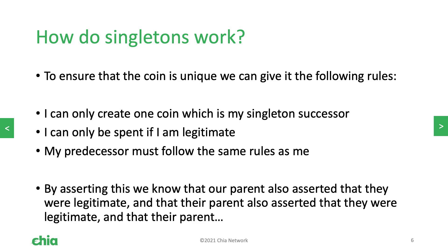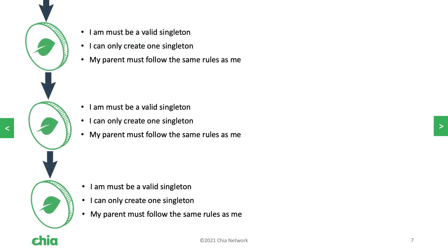We can do this by making the coin have the following rules: the coin must only create one coin which is the singleton successor; the coin must be following legitimate singleton rules; and the coin's parent must also be following the same rules that the coin is. By making sure that our parent is following the same rules as us, we get a nice recursive history where we know that our complete lineage is legitimate. As you can see in this diagram, the most recent coin is at the bottom and it knows that it's valid — its parent is valid, who in turn knew that its parent was valid, and so on.